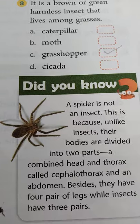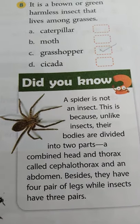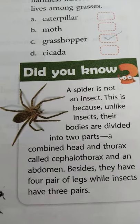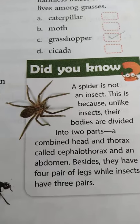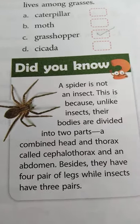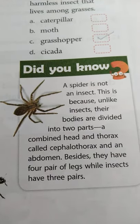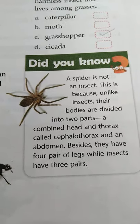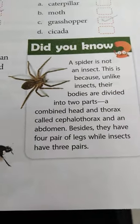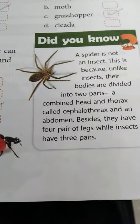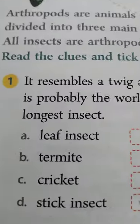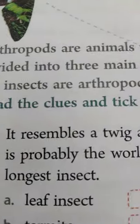In the 'Did You Know' portion: a spider is not an insect. This is because unlike insects, their bodies are divided into two parts — a combined head and thorax called the cephalothorax, and an abdomen. Besides, they have four pairs of legs while insects have only three pairs. So the spider does not come under the insects category. You have to know about this and learn about the arthropods, which is a very important term in science.